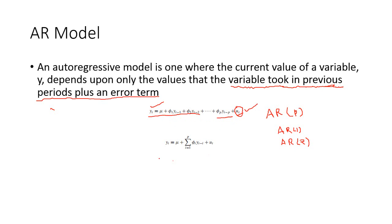In more concise form, yt is written as a constant term, plus the lagged values, plus the error or disturbance term. This is the AR(p) model — an AR model with order p — because there are p lags. The first lag, second lag, through to the p-th lag are all lags of the same variable yt used in the model. Hence we call it an AR(p) model.